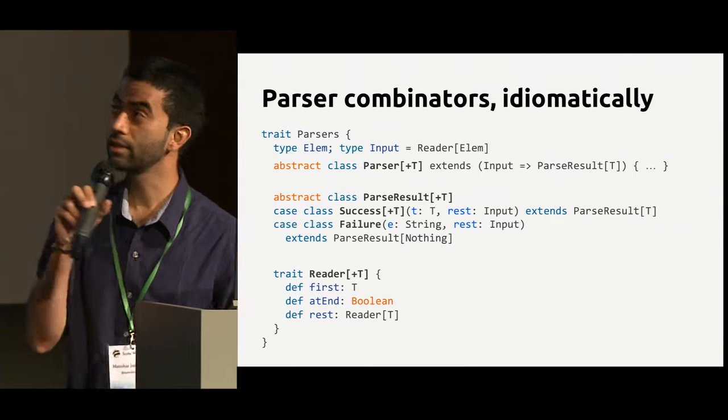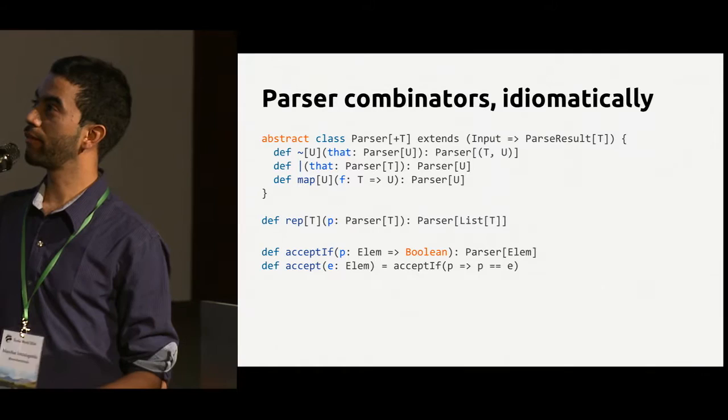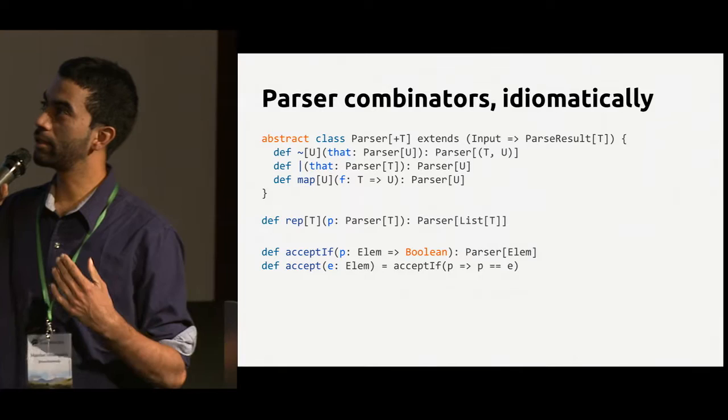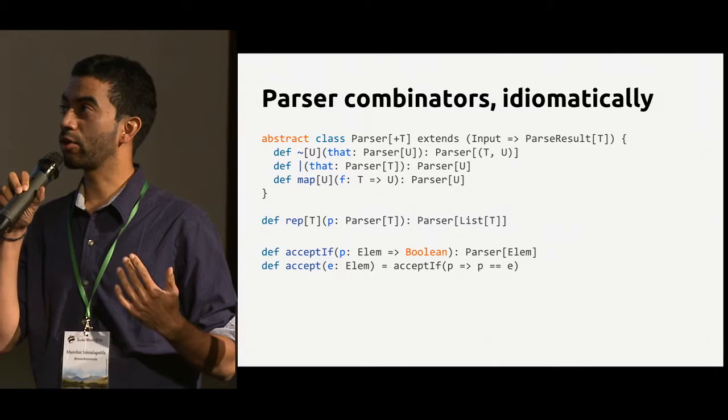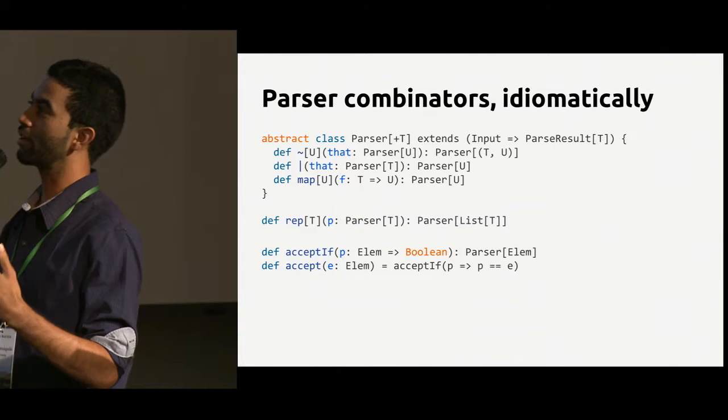You have the following combinators to create complex parsers from simple ones. The simplest parsers are at the bottom: accept if, which succeeds if the element passes the predicate passed as a parameter. You can create a combinator for a single element using accept if — this is what we mean by reusing the combinator approach without needing to implement special functions for different parsers.